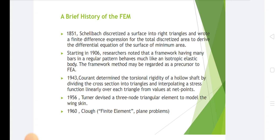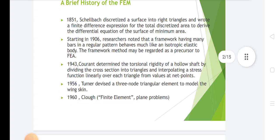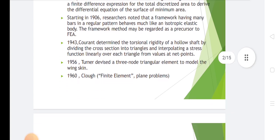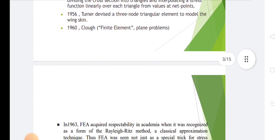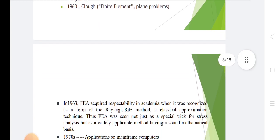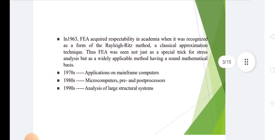The framework method may be regarded as a precursor to FEM. In 1943, Courant determined the torsional rigidity of a hollow shaft by dividing the cross-section into triangles and interpolating a stress function linearly over each triangle from values at net points. In 1956, Turner devised a three-node triangular element to model the wing skin. In 1960, Clough introduced finite element plane problems.